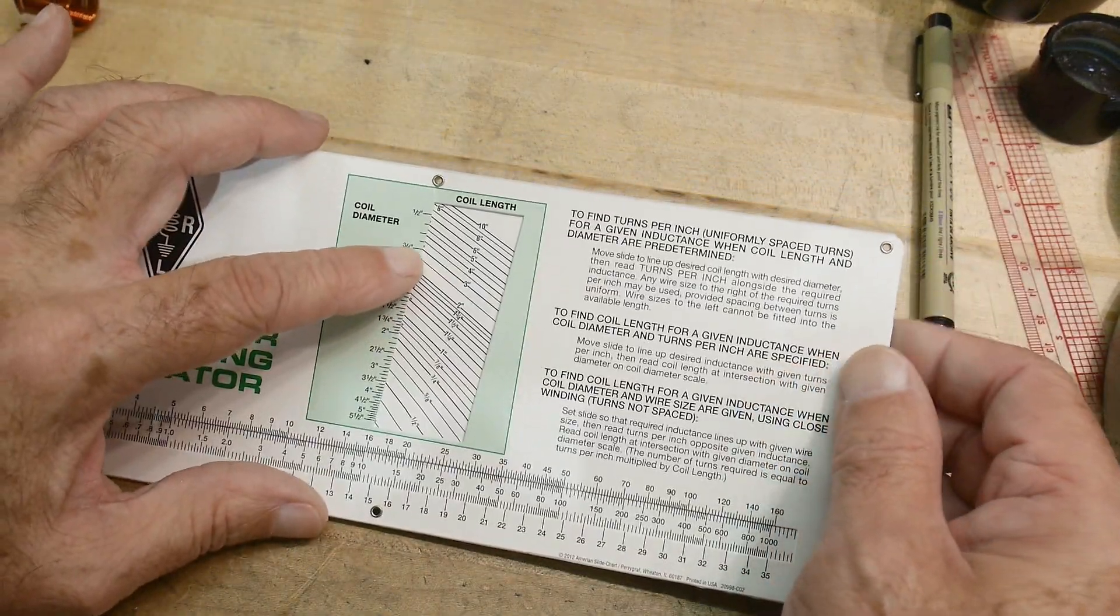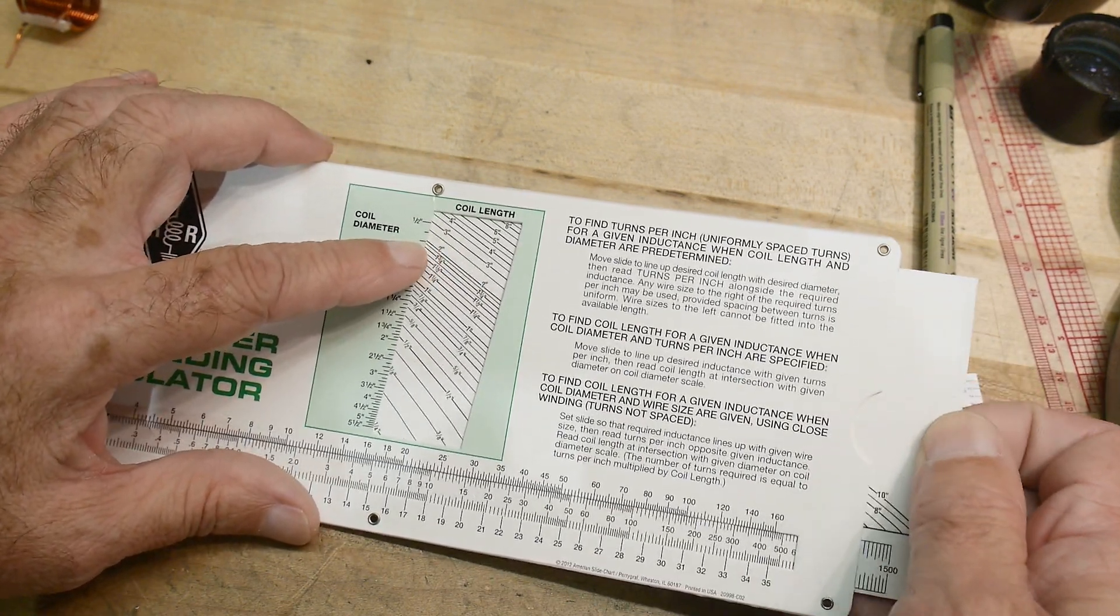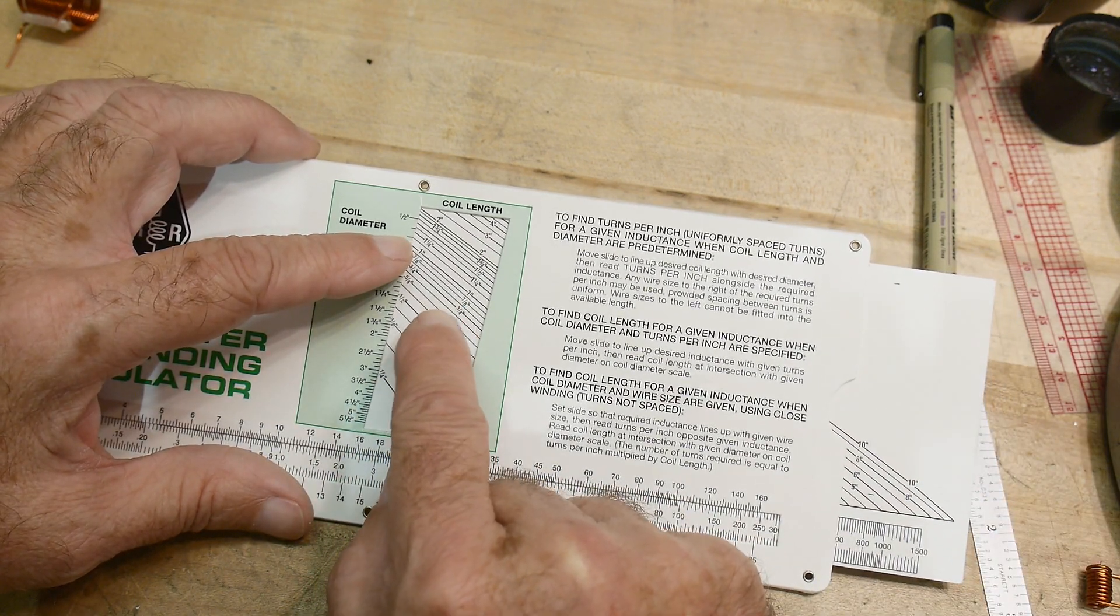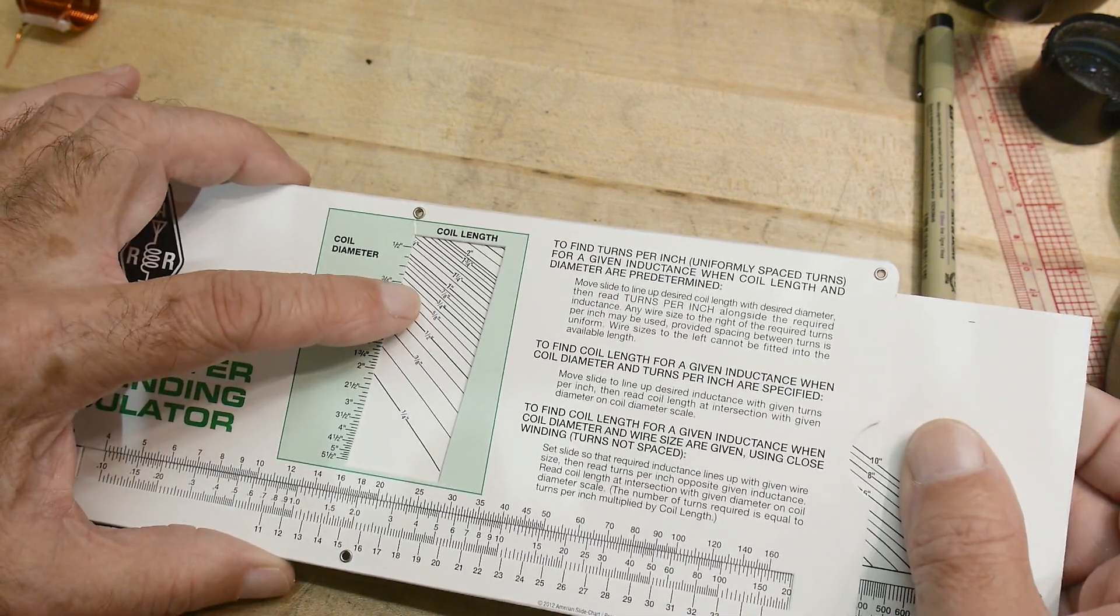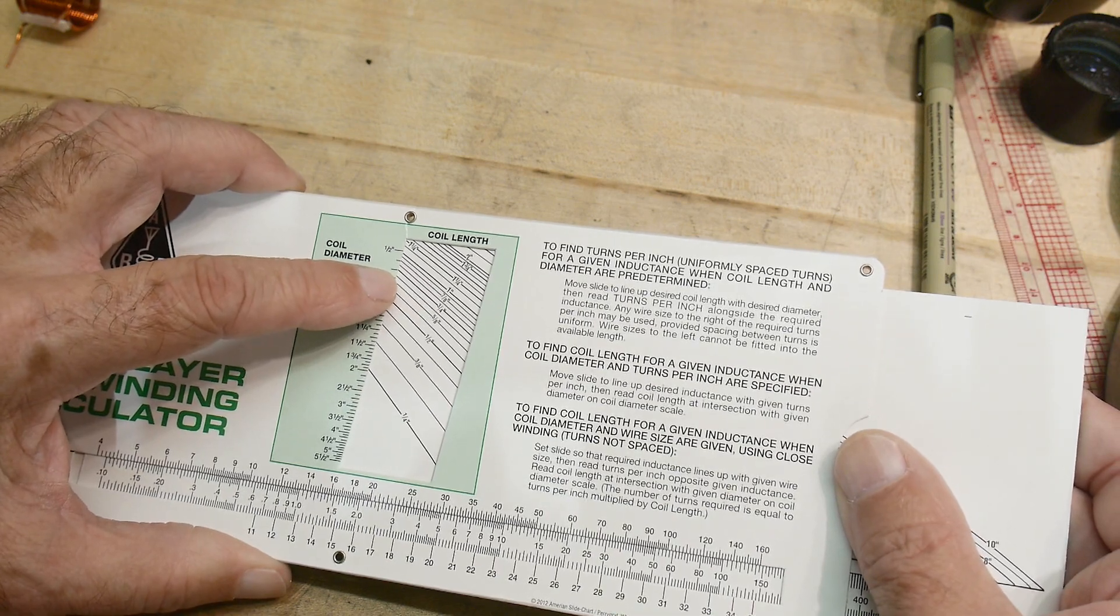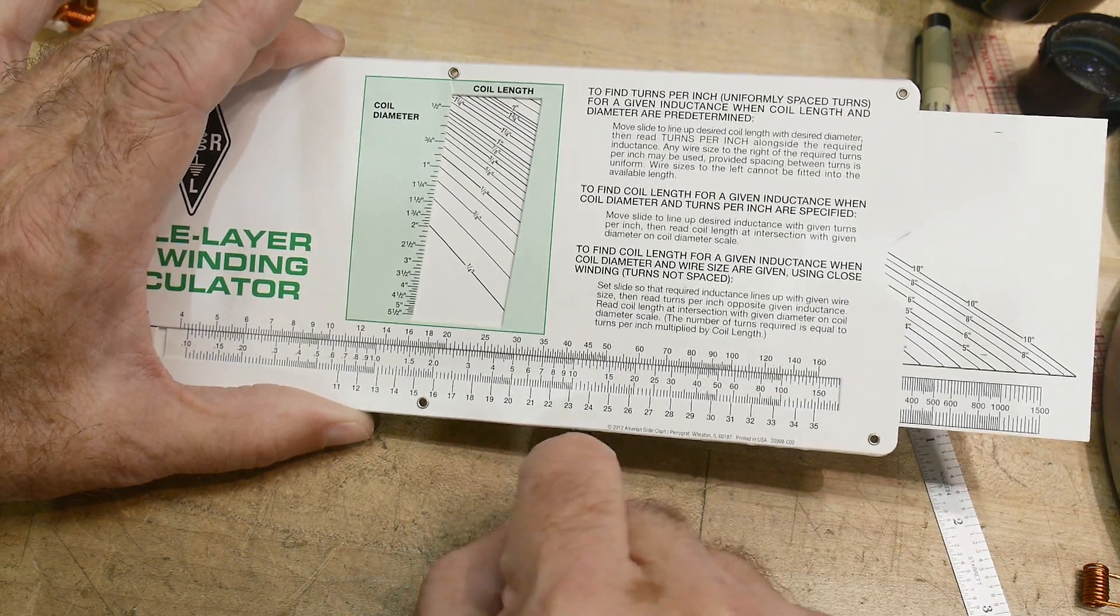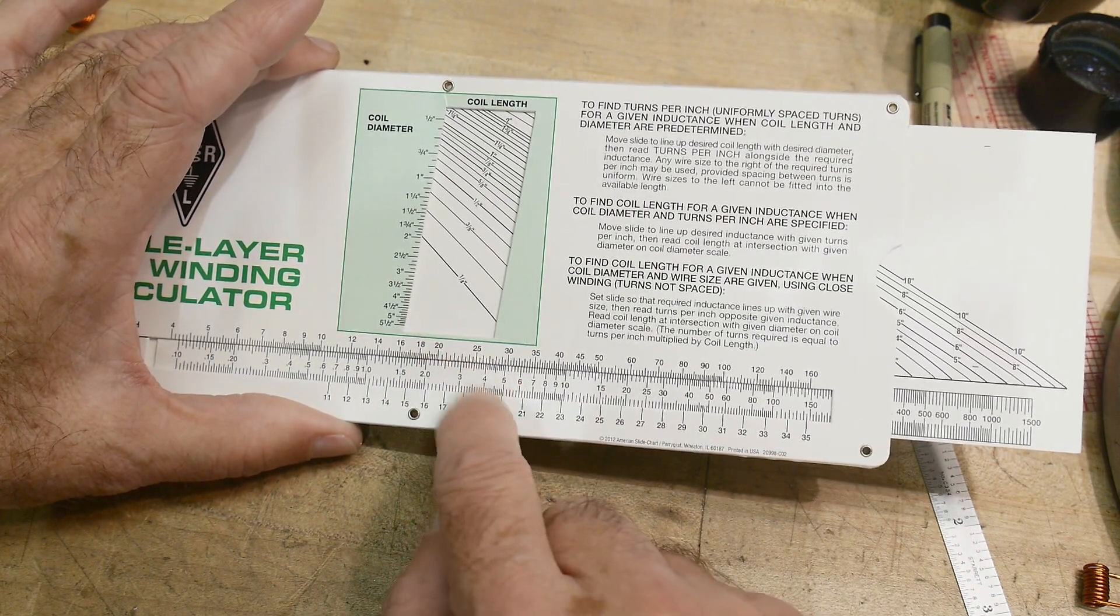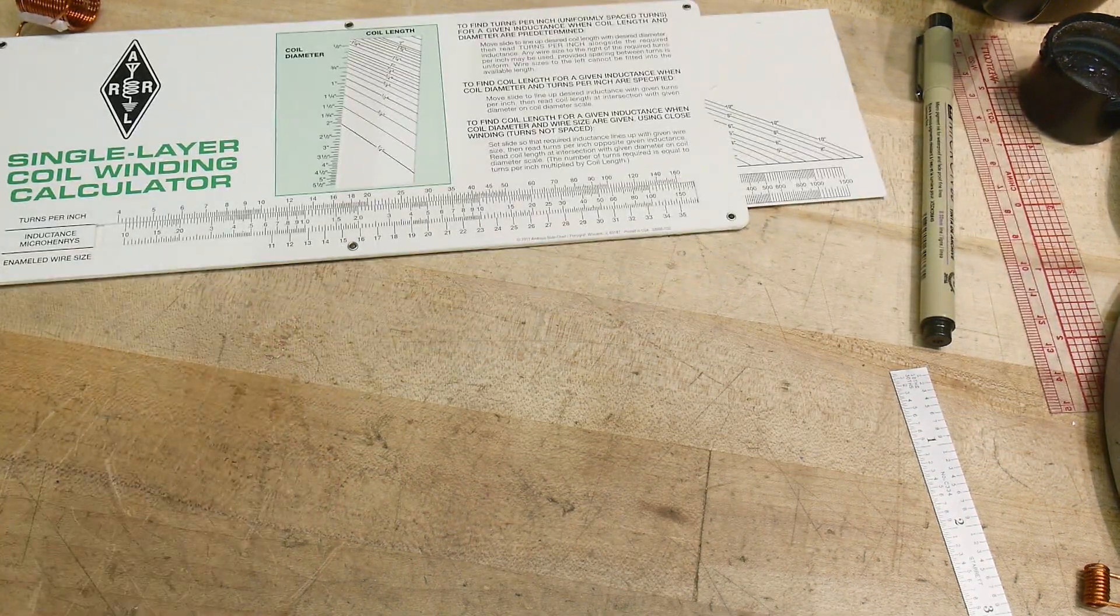We see the coil diameter is five eighths, which is sort of there. And our coil length is three quarters, which is there. So I'm going to put them about together there. They cross right about there. And then we can come down here and we can see that at our calculation, this is about four micro Henrys. Let's measure it.